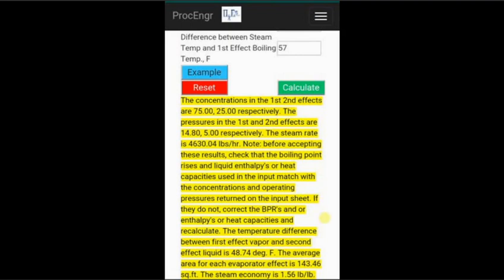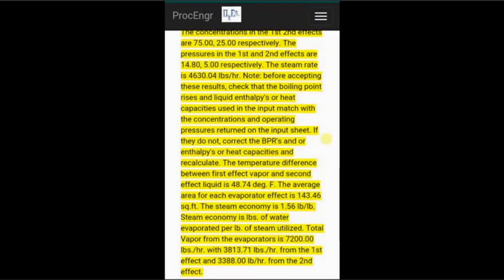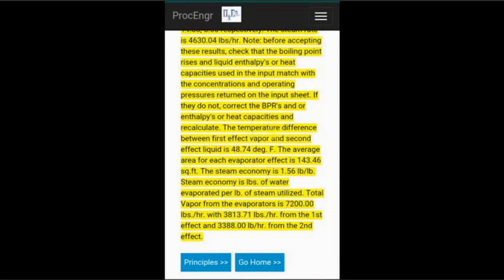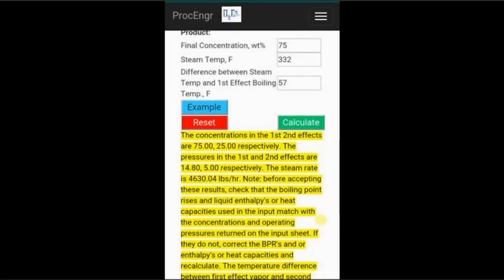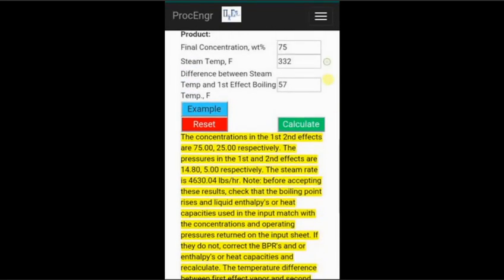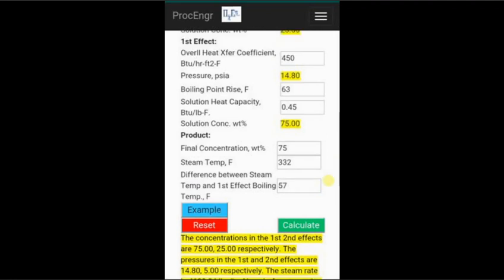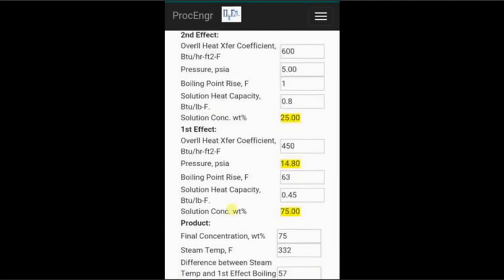We see for this case, the steam consumption is 4,630 pounds per hour. The difference in temperature between effects is 48.74 degrees Fahrenheit. The average area of each evaporator is 143.46 square feet. The steam economy is 1.56 pounds of water evaporated per pound of steam utilized. And the total amount of evaporation is 7,200 pounds per hour, with 3,813 coming from the first effect and the balance coming from the second effect.